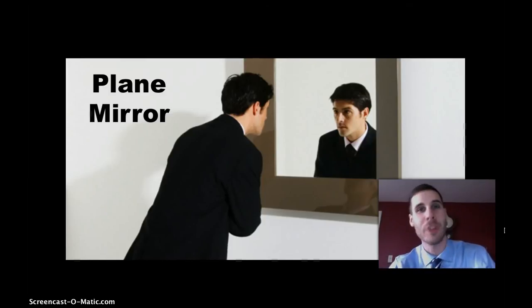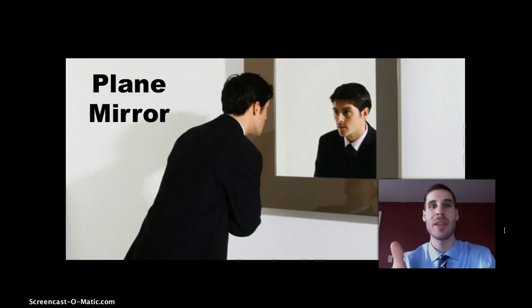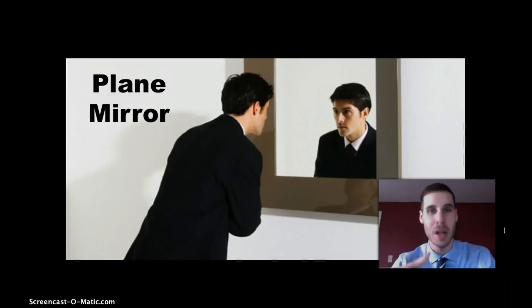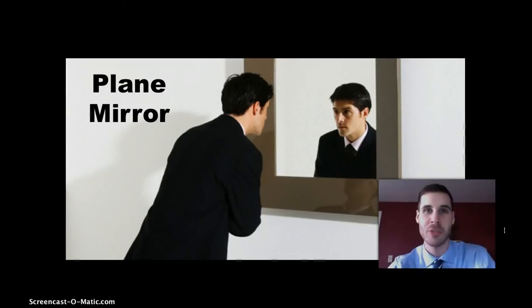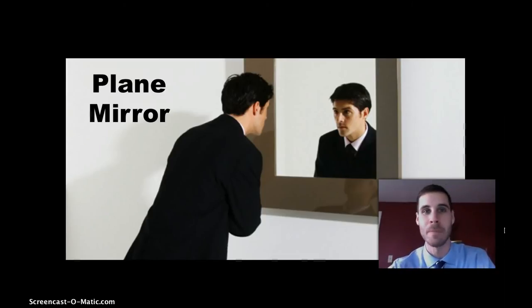You can see the photo of this guy looking into the plane mirror — he looks just the same way that he does in real life. There's no distortion; he's not any bigger or smaller than usual. Plane mirrors are pretty straightforward. Angle in equals angle out — we've learned that law of reflection, and plane mirrors obey it pretty well.